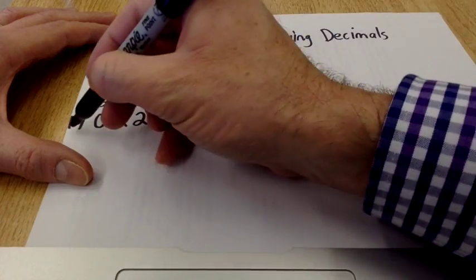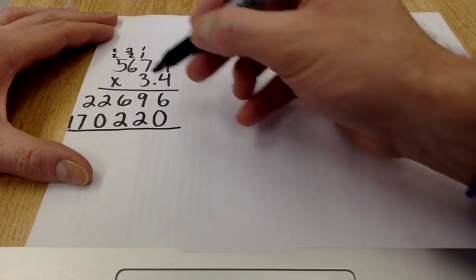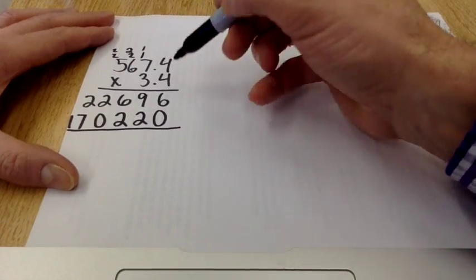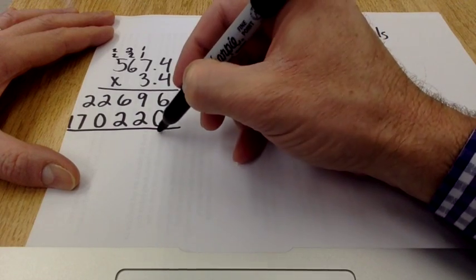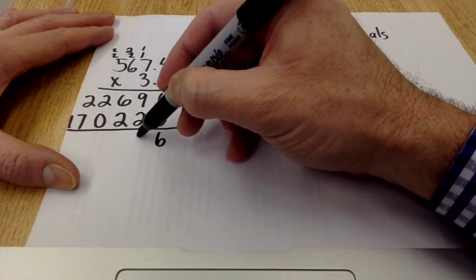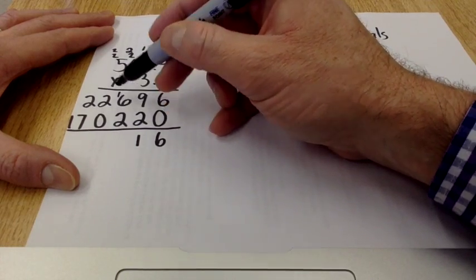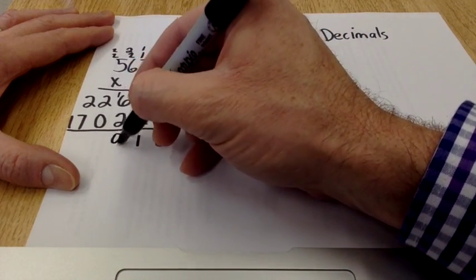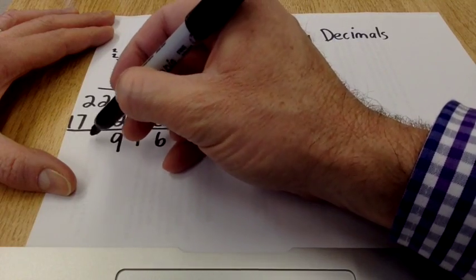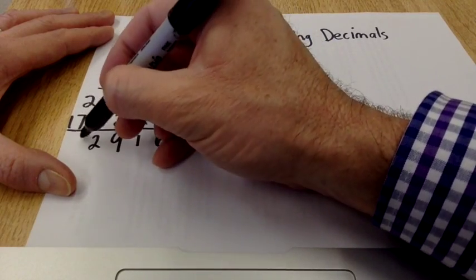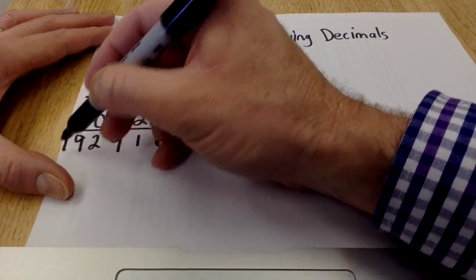I'm now going to add these two together. So 6 plus 0 is 6. 9 plus 2 is 11. Carry the 1 up there. 6 plus 2 is 8. Plus 1 is 9. 2 plus 0 is 2. 2 and 7 is 9. And drop the 1.